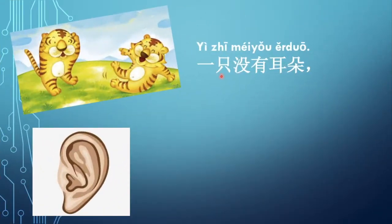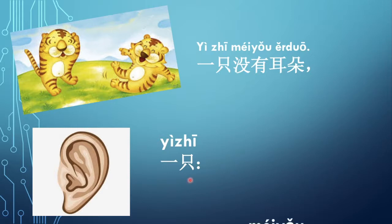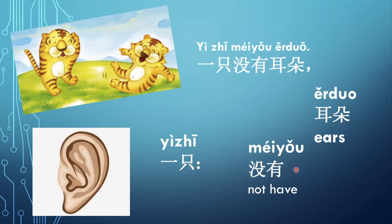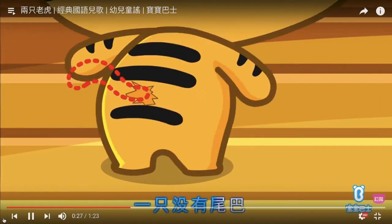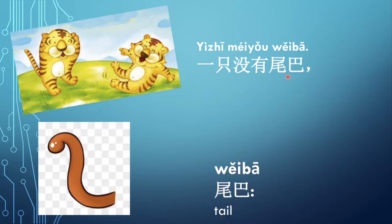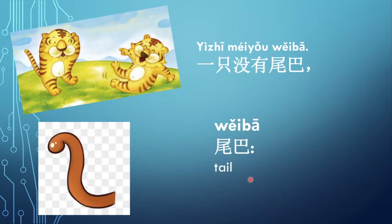一只没有耳朵. 一只 means 'one tiger.' 没有 means 'does not have.' 耳朵 means 'ears.' So 一只没有耳朵 means 'one of them does not have ears.' 一只没有尾巴. 没有 means 'do not have,' and 尾巴 means 'tail.' So 一只没有尾巴 means 'another one does not have a tail.'